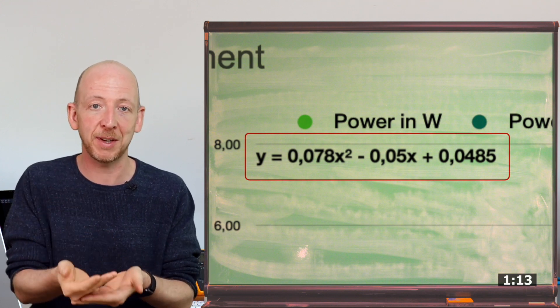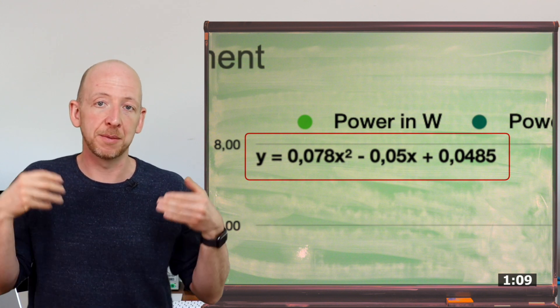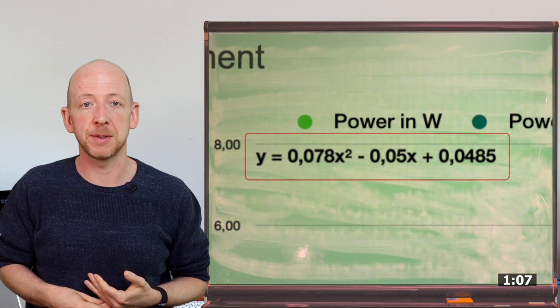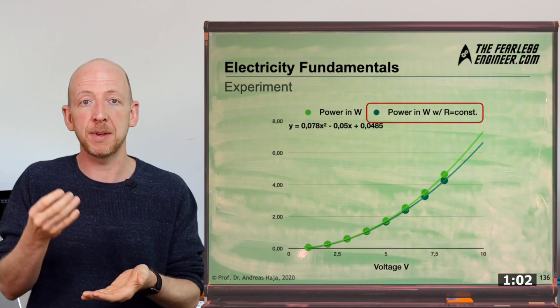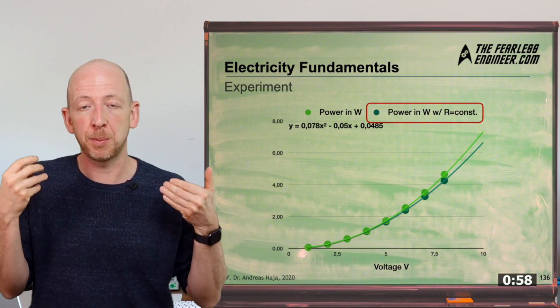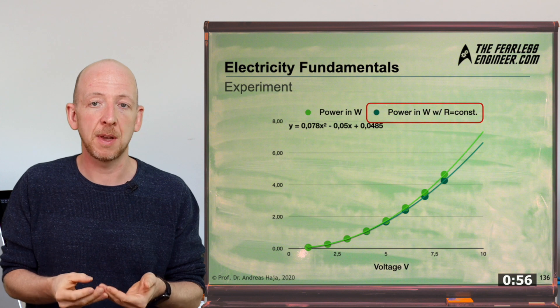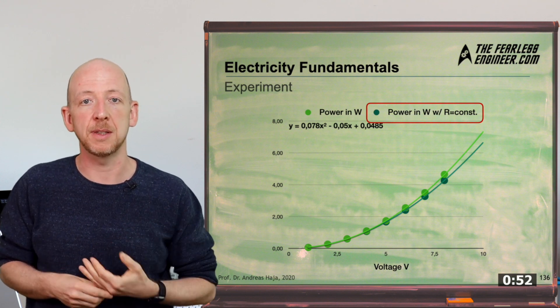This corresponds to our expectation based on the power law because power is equal to the ratio of voltage squared and resistance. By the way, the dark green curve you can see here shows the performance as it would be if the resistance would not change its value with increasing current, that is without positive differential resistance. The higher the voltage, the greater the deviation and thus the additional heating as well.